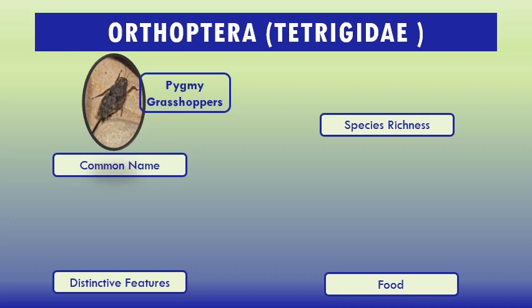They are distinguished by their small size, usually 6 to 16 millimeters in length, their dark cryptic coloration — usually brownish-gray, gray-black, or mottled, but never green — their prominent eyes, and especially their greatly enlarged pronotum, which often extends backward to the tip of the abdomen and ends in a sharp point.